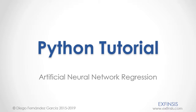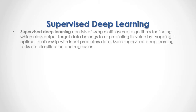Python Tutorial: Artificial Neural Network Regression. Supervised deep learning consists of using multi-layered algorithms for finding which class output target data belongs to, or predicting its value by mapping its optimal relationship with input predictors data. The main supervised deep learning tasks are classification and regression.